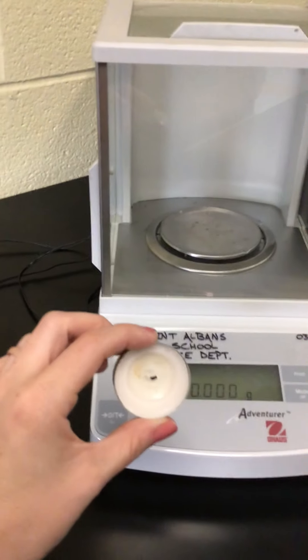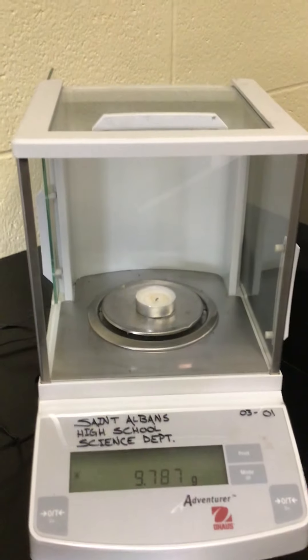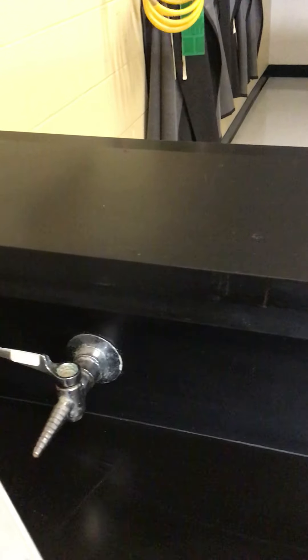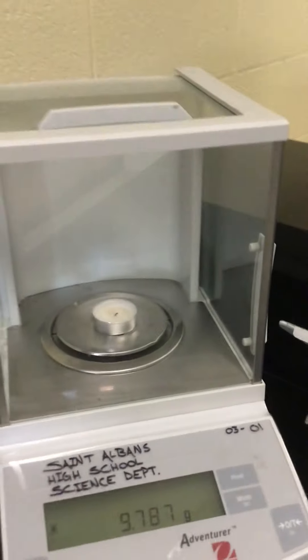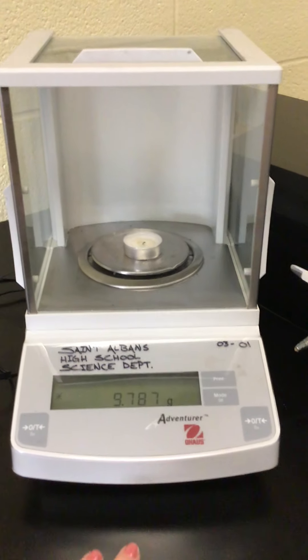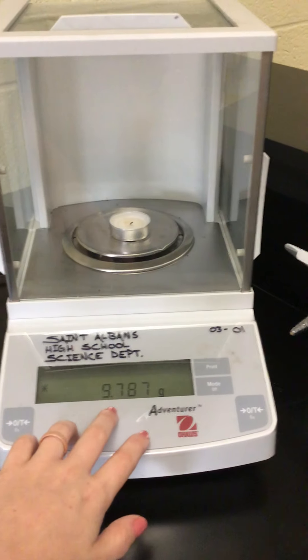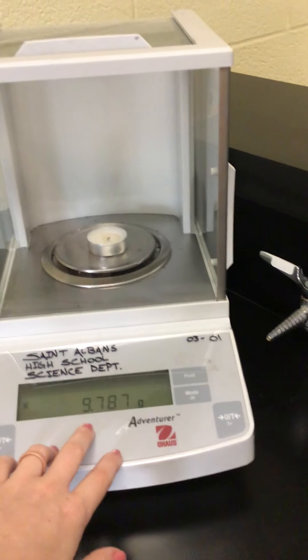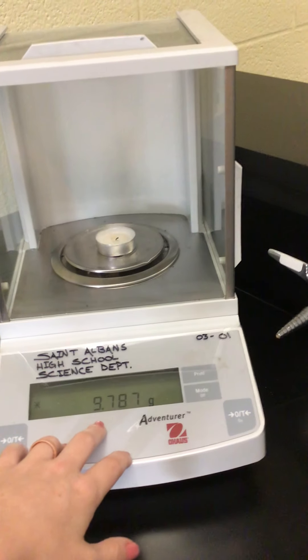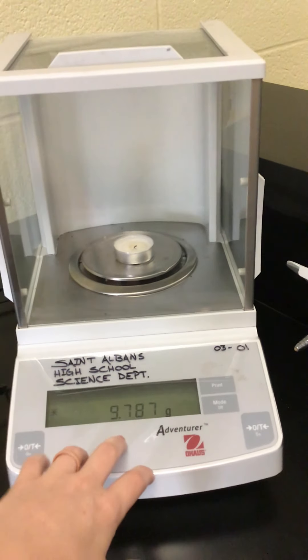Now I'm weighing our little candle for the candle lab so I'm gonna open the door, put it on our little circular weighing portion, and then I'm going to shut the door, wait for the scale to kind of get a constant reading. This one's really good, it doesn't fluctuate and that's why I like it so much. I could potentially give this measurement to the nearest thousandth of a gram.